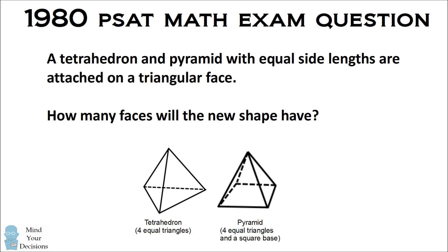A tetrahedron is a shape with four equilateral triangles, and a pyramid has four equilateral triangles on its sides and a square base.